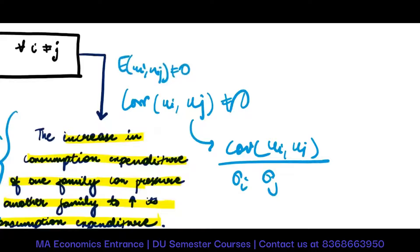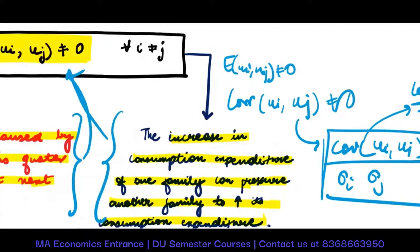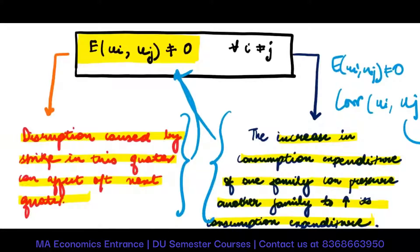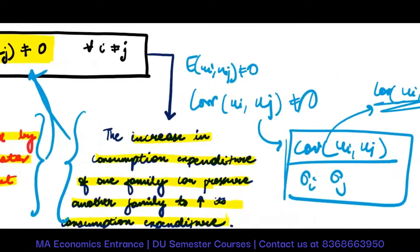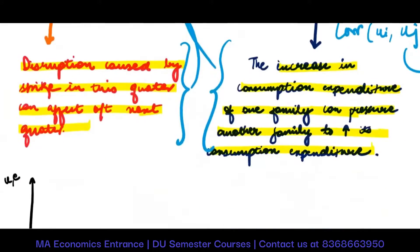Correlation is covariance divided by standard deviations. So indirectly we are saying the covariance between ui and uj will not be equal to zero — then there is the problem of autocorrelation. If they are not equal to zero, autocorrelation exists; if they are equal to zero, no autocorrelation exists.